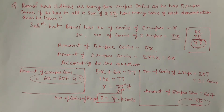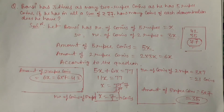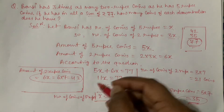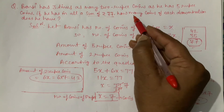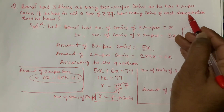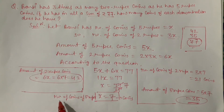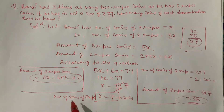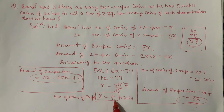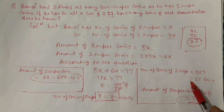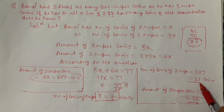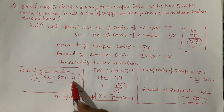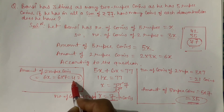Waise dekha jaaye toh aapka answer wahan par khatam ho chuka tha. Question mein pucha gaya tha how many coins of each denomination does he have — toh 5 rupee ke coins 7 aaye aur 2 rupee coins 21 aaye. Maine thoda extra karke unse banne waala amount bhi bata diya. Hopefully aapko samajh mein aaya hoga.